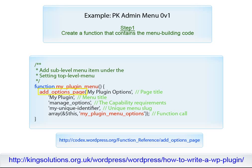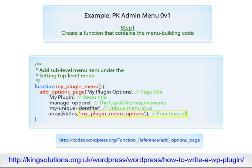The parameters required for the AdoptionsPage function are: a page title, MyPluginOptions; a menu title, MyPlugin; the capability required for this menu, ManageOptions; a unique menu slug name to refer to this menu; and the function to be called to output the page content for this menu item, MyPluginMenuOptions.